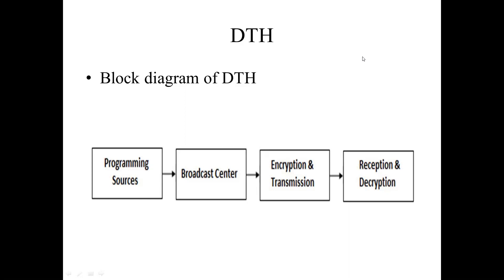DTH broadcasting to home TV receivers takes place in the Ku-band, in the range of 12 GHz. This service is known as Direct To Home service. DTH services were first proposed in India in 1996.